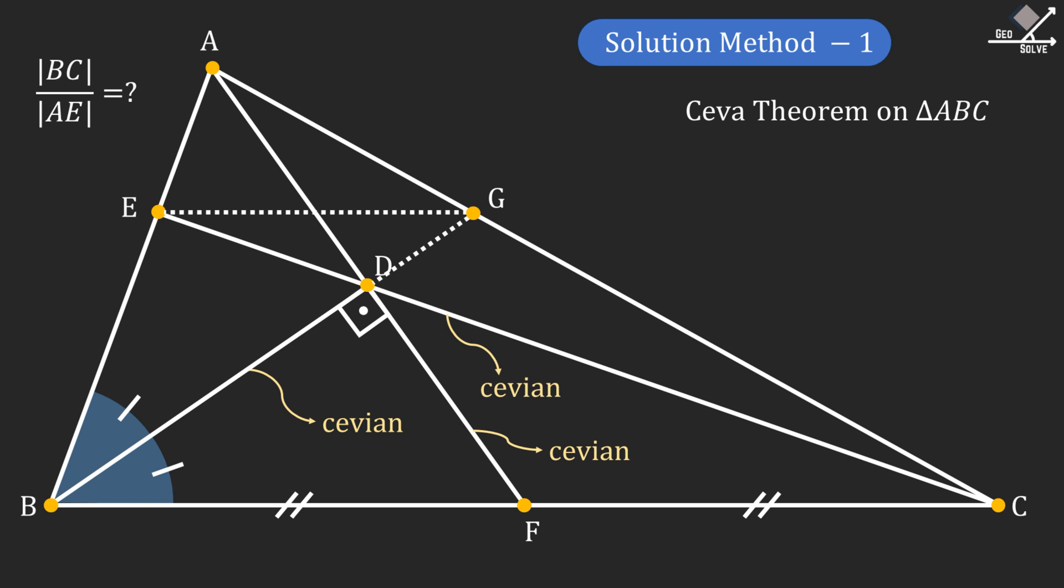If we apply this to our question we will have AE over EB times BF over FC times CG over GA will be equal to 1. Since we know that BF is equal to FC, BF over FC ratio will be equal to 1. And from here we can say that AE over EB ratio will be equal to GA over CG ratio.